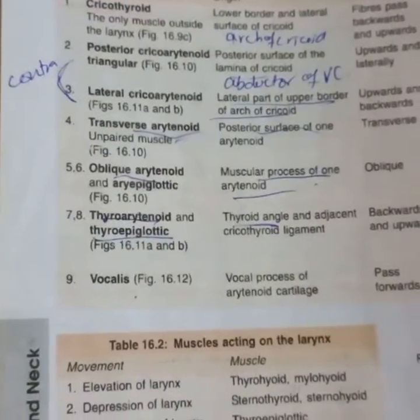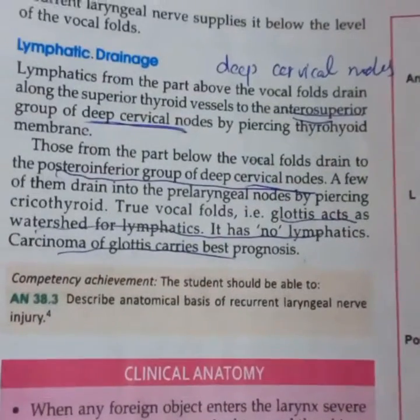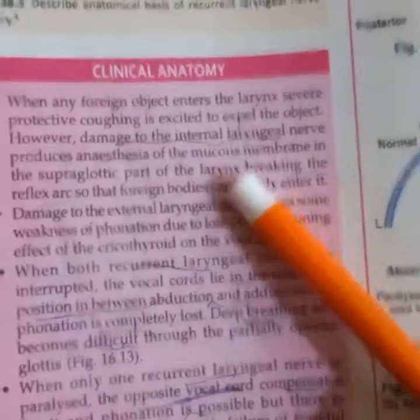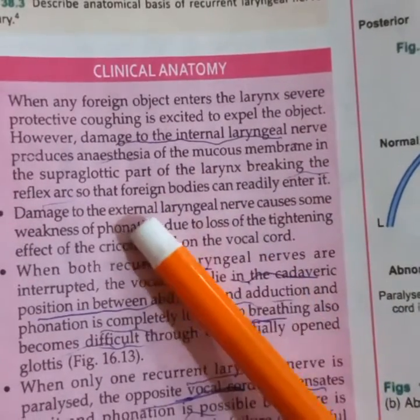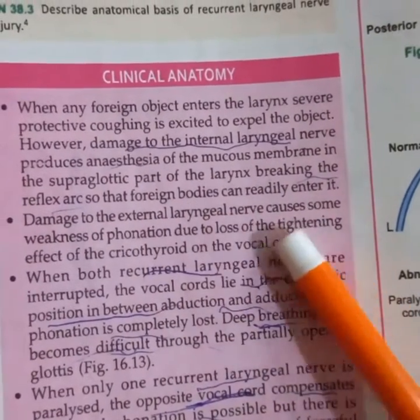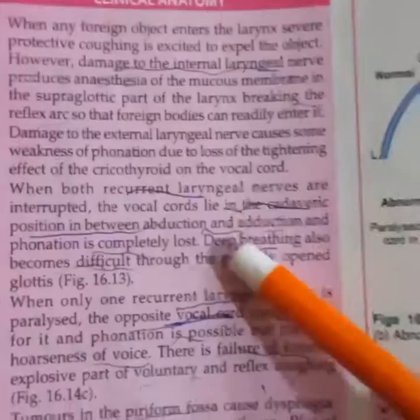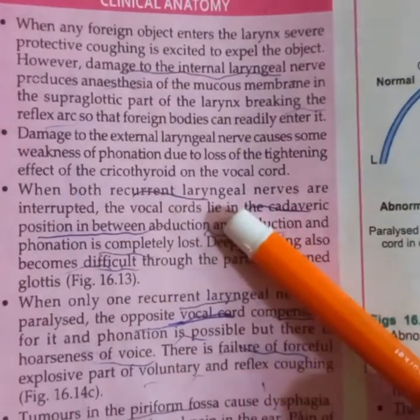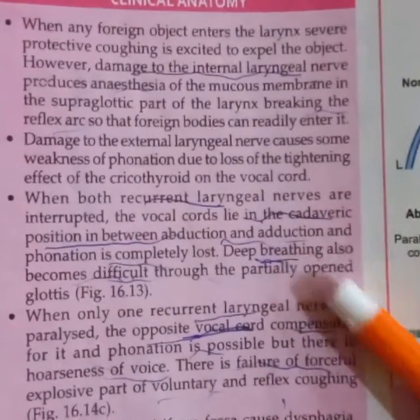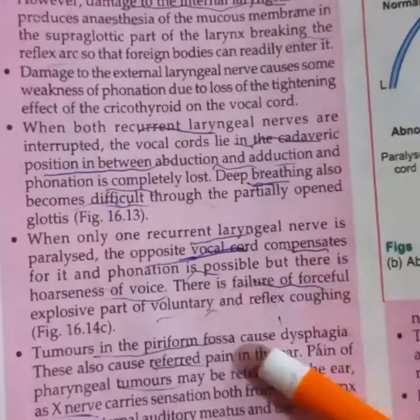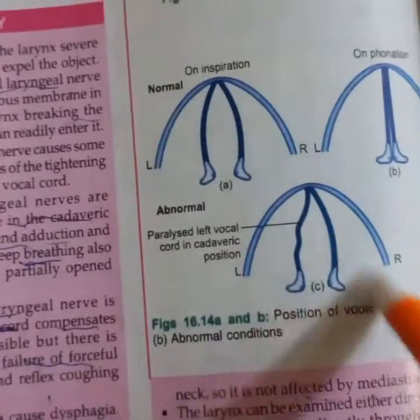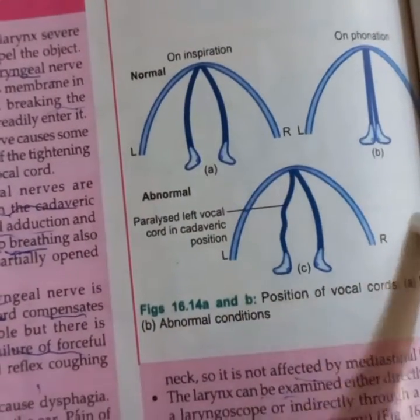In lymphatic drainage, we have an upper and posterior group. If the internal laryngeal nerve is damaged, there is anesthesia of the mucous membrane of the supraglottic part. If the external laryngeal nerve is damaged, the cricothyroid is affected, causing flaccid vocal cord. If both recurrent laryngeal nerves are damaged, the vocal folds are in the cadaveric position, making breathing difficult. If the left vocal fold is in the cadaveric position, it means the right recurrent laryngeal nerve is damaged.